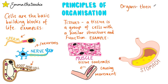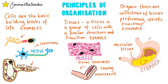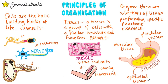Then we have organs. These are collections of tissues performing specific functions. For example, the stomach has got three different types of tissue: muscular tissue to churn and move the food; glandular tissue that can release digestive juices; and epithelial tissue, which covers the surfaces of the stomach, both inside and out.